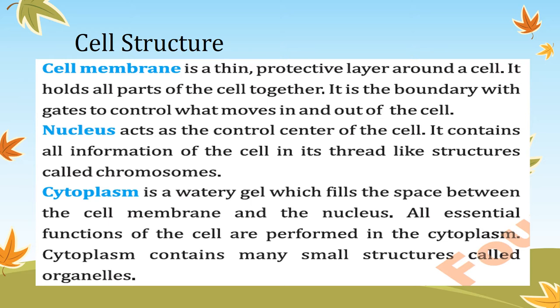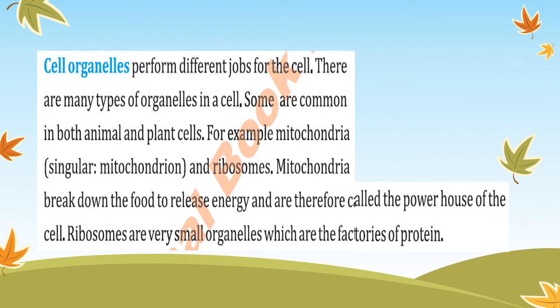The third similarity is cytoplasm — a watery gel-like structure present inside the cell where all essential functions and processes of the cell are performed. Cytoplasm contains very small structures called organelles, of different types, including mitochondria and ribosomes. Mitochondria are called the powerhouse of the cell because they break down food and release energy. Ribosomes are called the factories of proteins because they play a key role in protein formation.